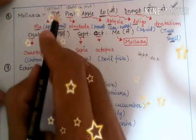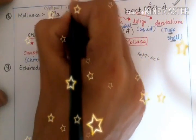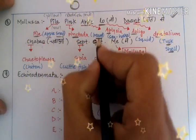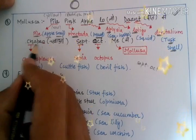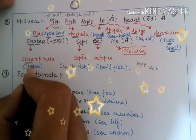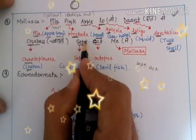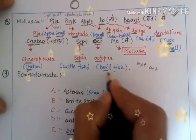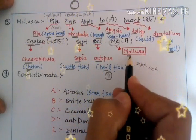Continuing the trick: pink means Pinctada, the American pearl oyster, from which pearls are formed. Apple means Aplysia. Lo means Loligo. Daat means Dentalium — tusk shell. Chabao means to bite: Ch-A means Chiton, with 'ch' present in both chabao and Chiton. September means Sepia, which is known as cuttlefish. October means Octopus, which is called devil fish because it has eight arms and looks like a devil.